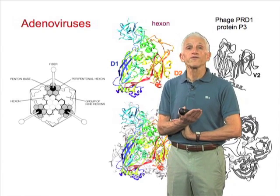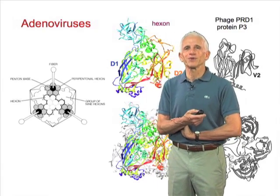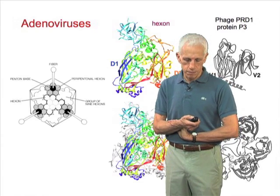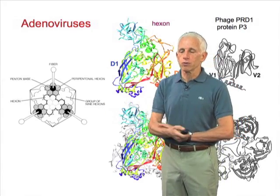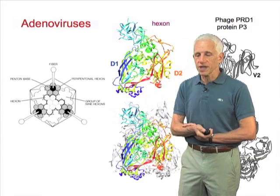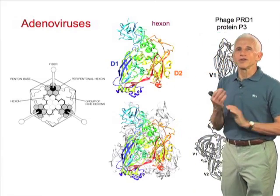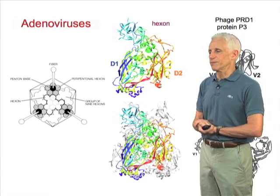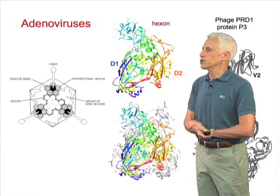We know that flu jumps from swine to people, as we all learned from the 2009 pandemic, or from birds to people, but also, ultimately, through eons of time, from one kingdom to another. At any rate, it does mean that the structures we're talking about show a striking similarity and a striking unity, whatever the evolutionary details.